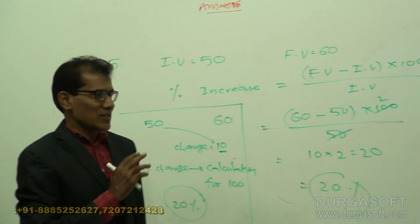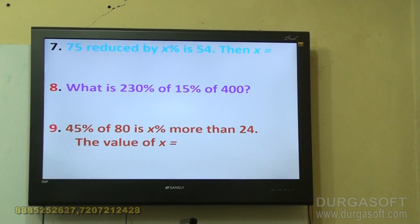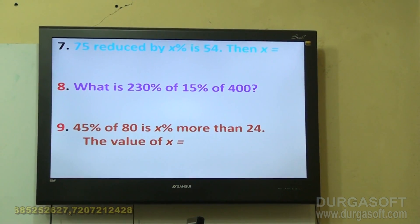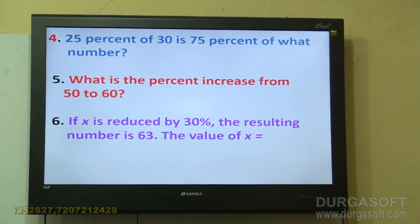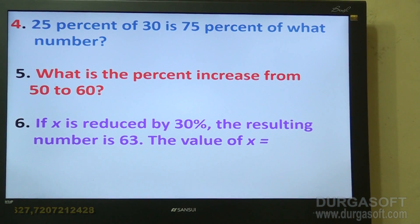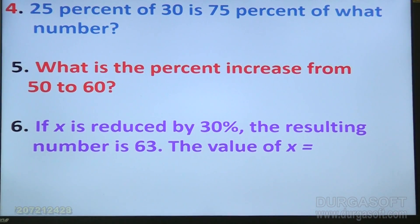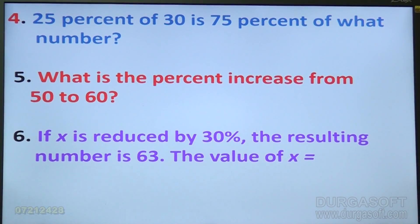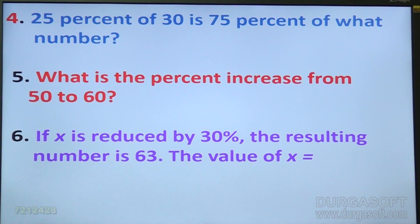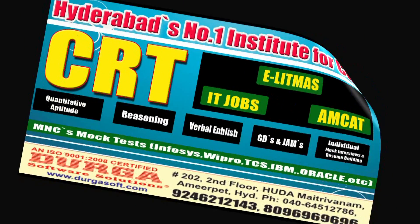Now coming to the next question: Question number six — if x is reduced by 30 percent, the resulting number is 63. The value of x is what?